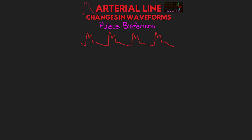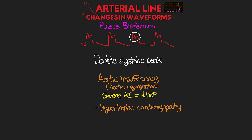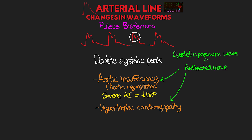The next abnormal waveform is something we call pulsus bisferiens, an abnormal pattern where we see a double systolic peak. This is usually the result of aortic insufficiency or aortic regurgitation, but it can also be the result of hypertrophic cardiomyopathy. For patients with severe aortic insufficiency, we also see a decrease in diastolic blood pressure as the blood flows back into the ventricle. The reason for this double systolic peak is that it results from both a systolic pressure wave as well as a reflective wave coming right back — either from the insufficient valve or, in hypertrophic cardiomyopathy, due to the slowing obstruction of outflow during mid to late systole.